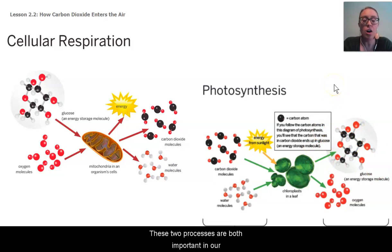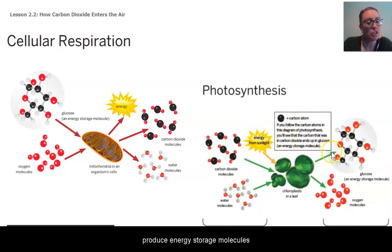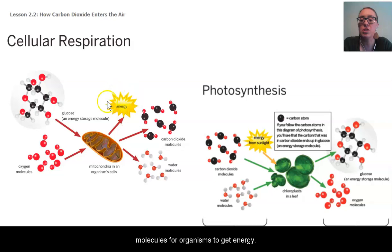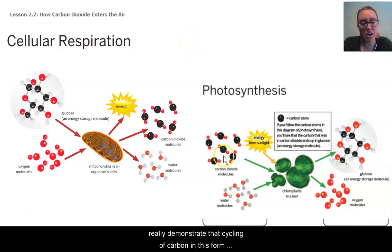Because one helps produce energy storage molecules and the other helps to use those energy storage molecules for organisms to get energy. So they're opposite processes and they both really demonstrate that cycling of carbon in this form of carbon dioxide.